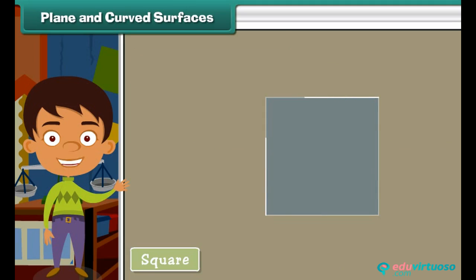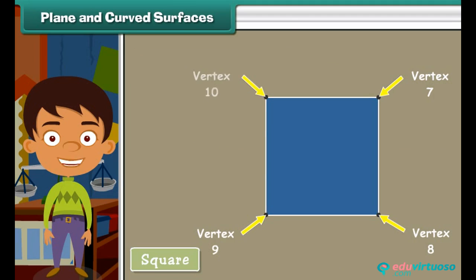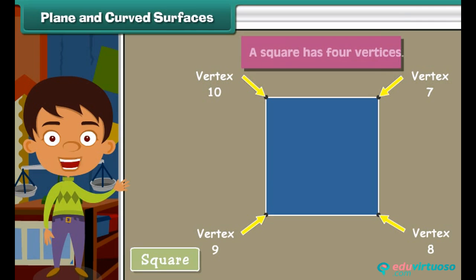The point at which two sides meet is called a vertex. Arrows 6, 7, 8, 9 indicate the vertices of a square. So here we see a square has four vertices.